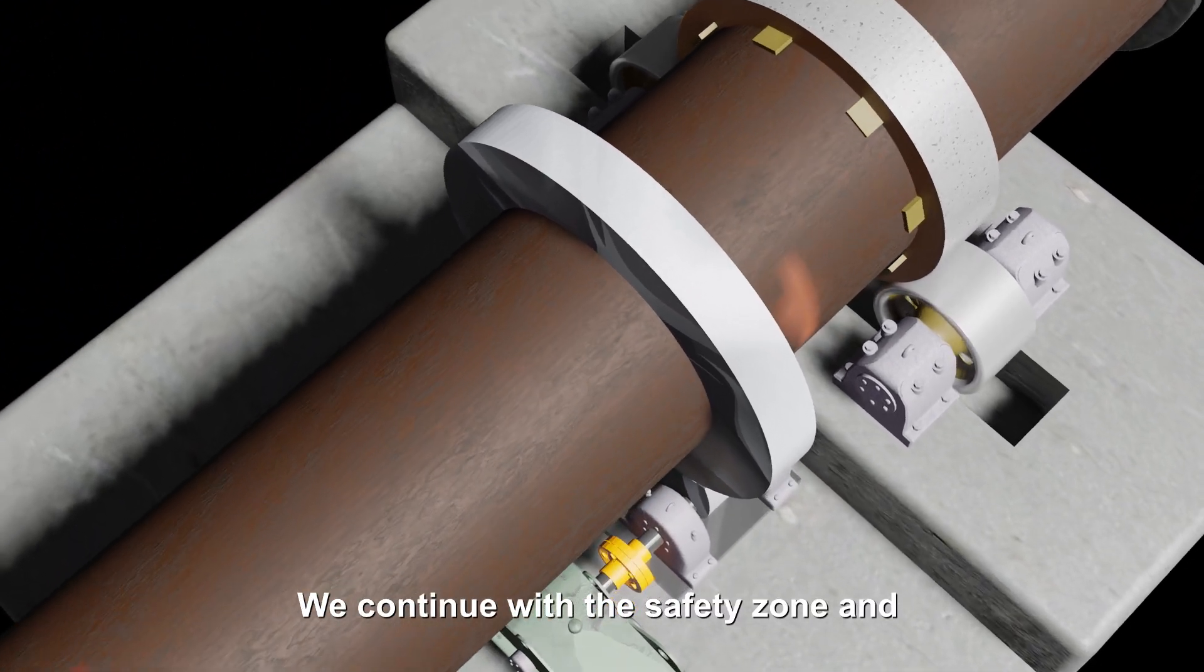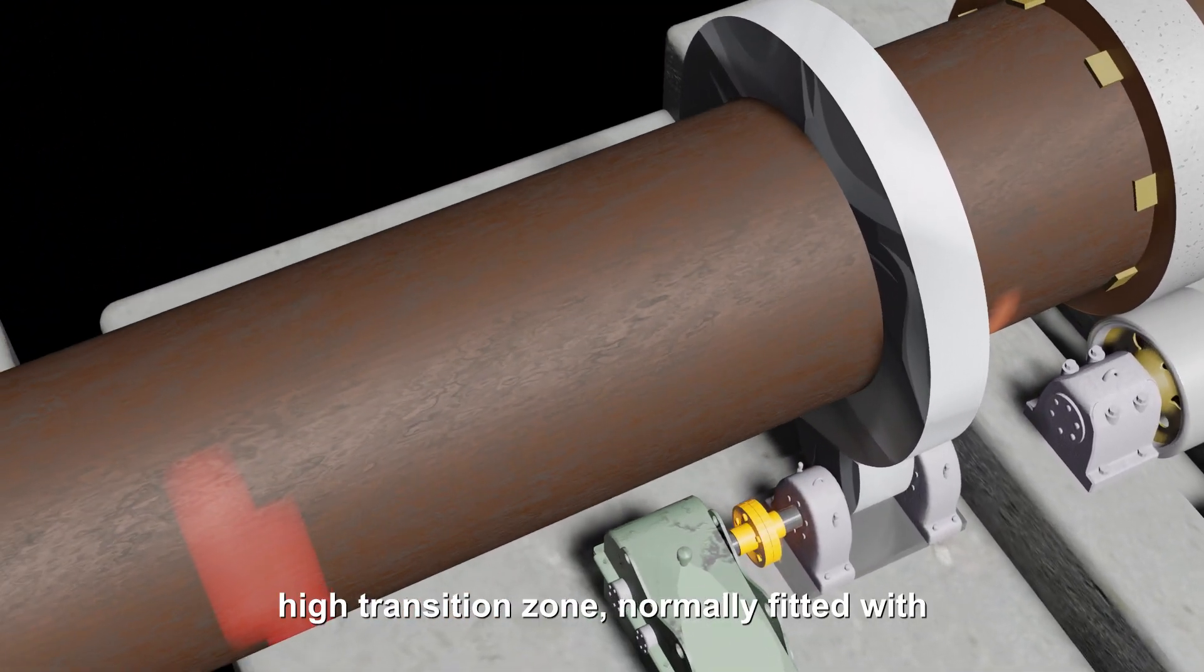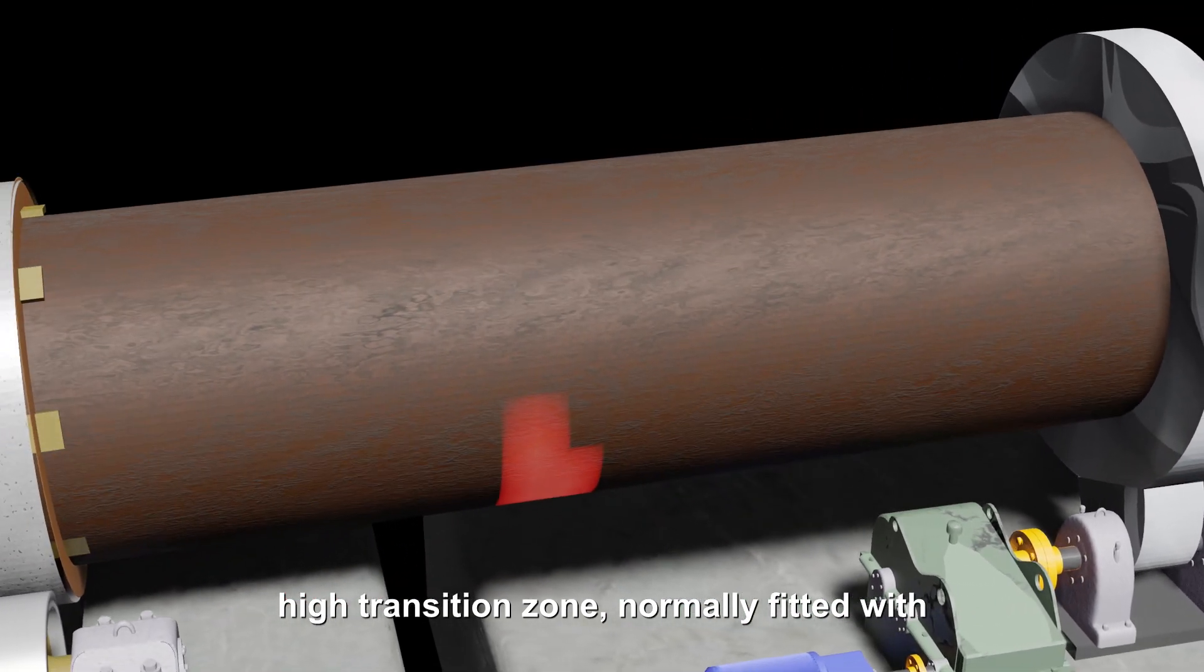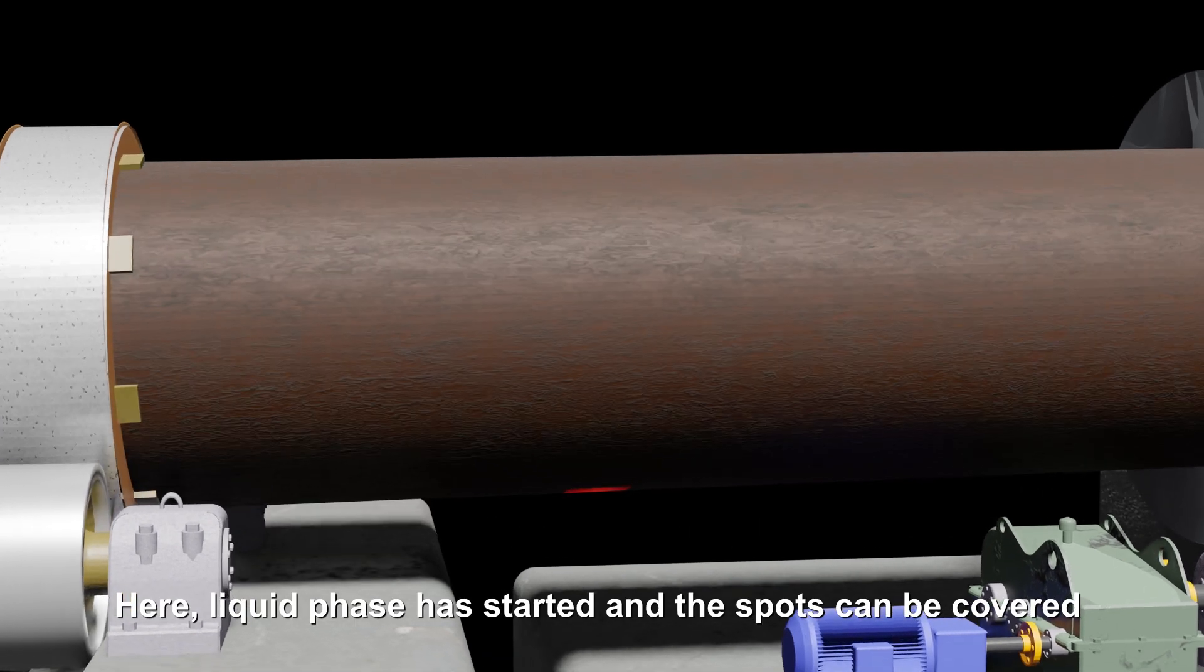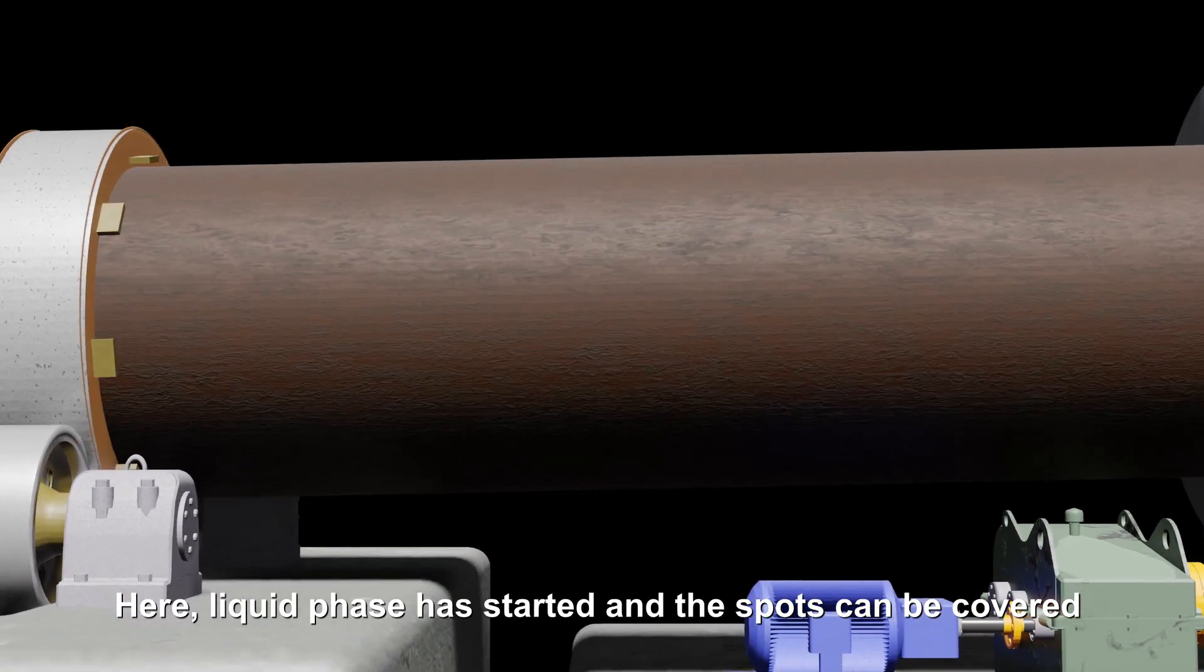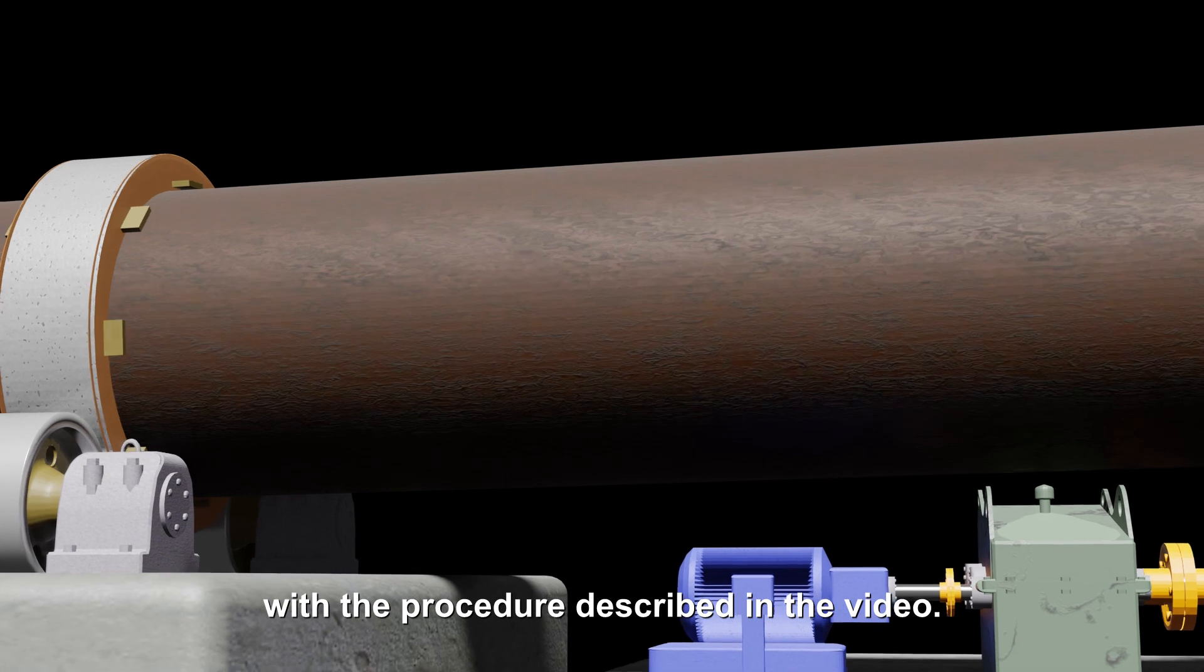We continue with the safety zone and high transition zone, normally fitted with magnesite refractory. Here liquid phase has started and the spots can be covered with the procedure described in the video.